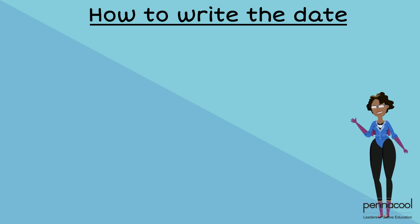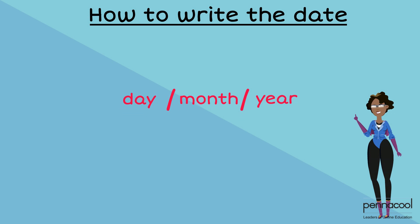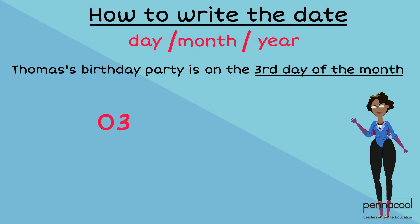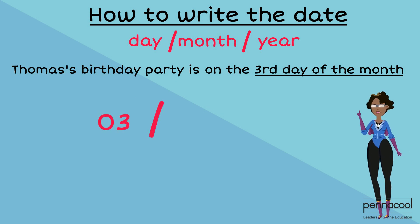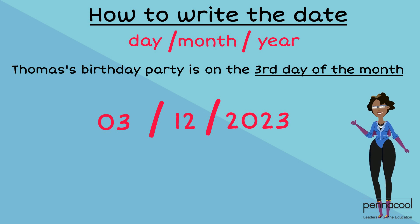Thomas doesn't know how to write the date on his birthday invitation. When writing dates, we use numbers to represent the day, month and year, separated by slashes. Since Thomas's birthday party is on the 3rd day of the month, we will write 03 first. It is in December, which is the 12th month of the year, and the party is next year, which will be 2023. Thomas should write 03 slash 12 slash 2023.